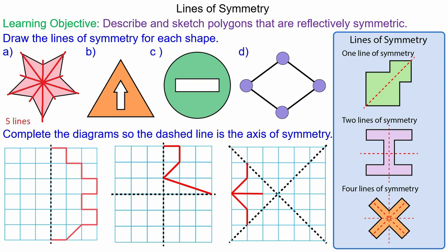For question b, the equilateral triangle itself would have three lines of symmetry but the arrow in the center reduces that to one line.